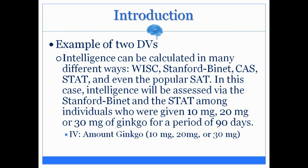For the dependent variables, this experiment includes two. The 90-day duration is not a dependent variable — it's not being measured, it's just part of the experiment. The factor that is going to depend on the independent variable and change is intelligence, and that's going to be measured via the Stanford-Binet as well as the STAT. So the two dependent variables are intelligence rated on the Stanford-Binet task and the STAT. The WISC and CAS are ways to test intelligence, but they are not how these researchers measured it.